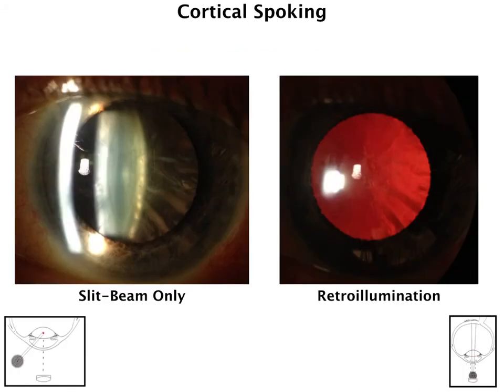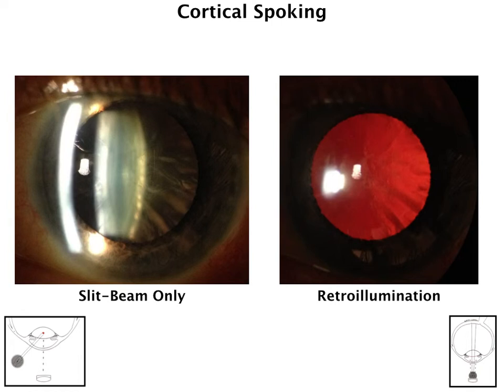Continuing down through the anterior chamber, let's talk about lens photographs. One of the most common types of cataracts is cortical spoking, and it's also one of the most interesting to photograph. The two best ways to photograph it are using a slit beam with just a little bit of diffuse illumination and retroillumination. The nice thing about a slit beam is that it gives you an optical cross-section of the lens, and you can see a little bit of the cortical spoking. But with retroillumination, you can really see the full extent of the cortical spoking and how it's progressing into the center of the lens, therefore probably significantly affecting the patient and most likely causing glare issues as well.